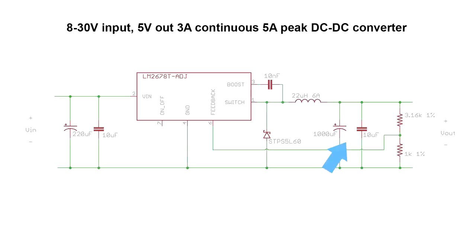On the output we have a combination of capacitors that will smooth out the high frequency content of the switching waveform, leaving you with relatively clean and stable DC. These resistors configure the LM2678 to give you a 5 volt output. Try to use 1% resistors if you want an accurate 5 volt output.